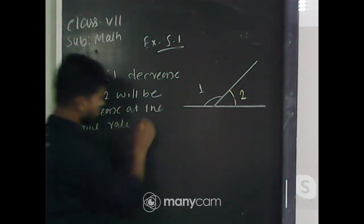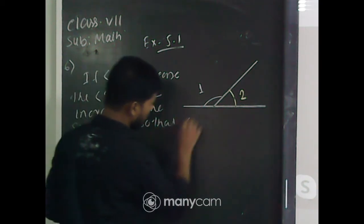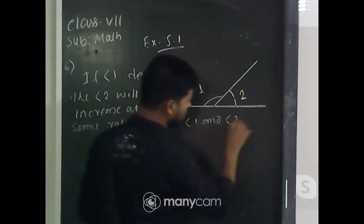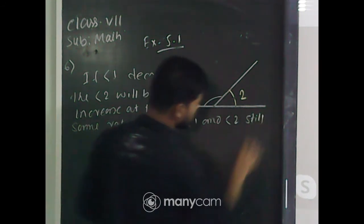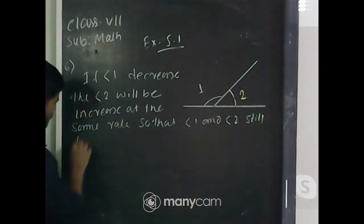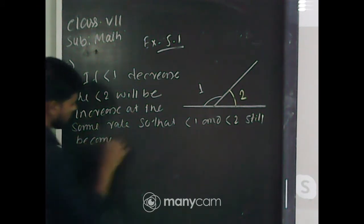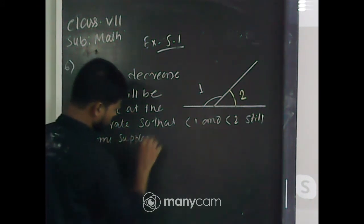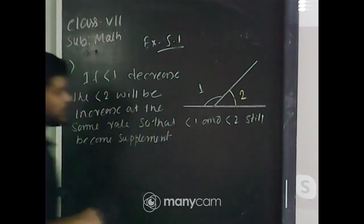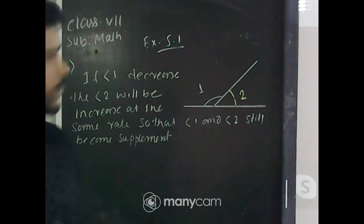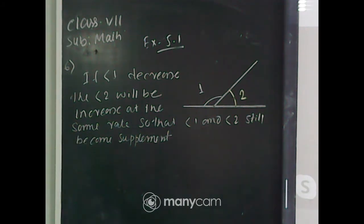So if angle 1 decreases, then angle 2 will be increased at the same rate, so that angle 1 and angle 2 still remain supplementary to each other. This is the answer. I hope you understood. Let us move to the next question.